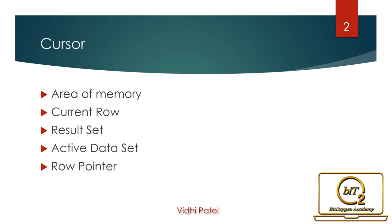Active data set: the data that is stored in the cursor is called the active data set. Row pointer: a pointer that is used to track the current row is known as the row pointer.